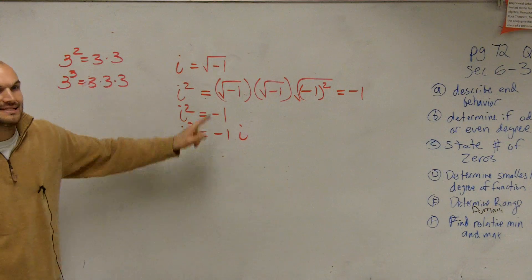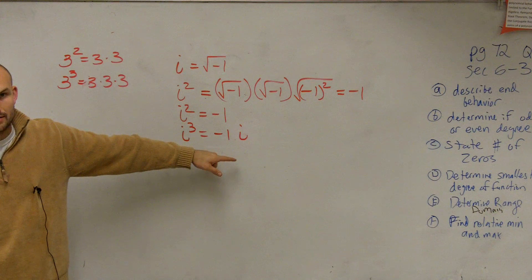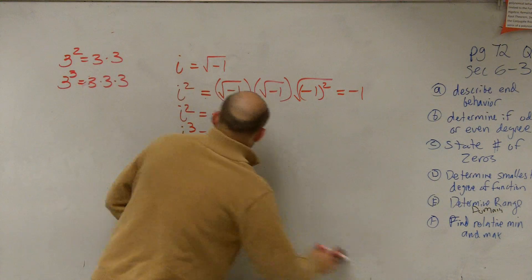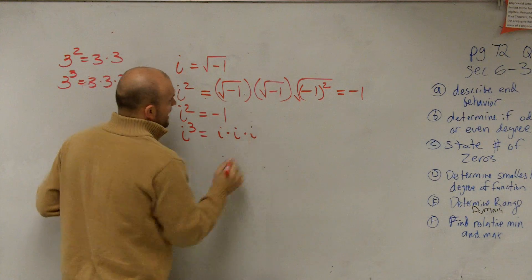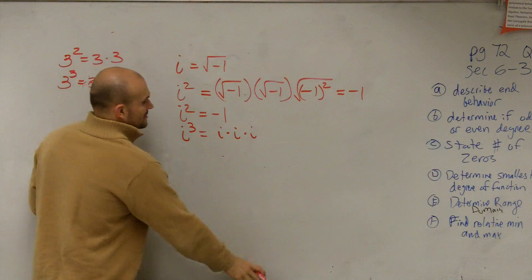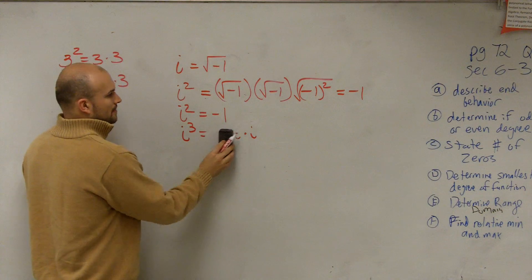Because i cubed means i times i times i, right? Actually, I'm going to write it this way. So i cubed means i times i times i. What does i times i mean? i squared means what? Negative 1.